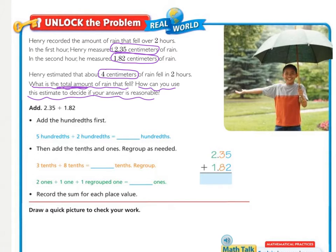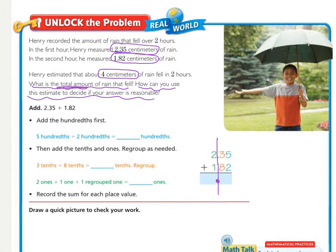The estimate is about 4 centimeters, and we'll use that after we have our actual. So now we need to add 2 and 35 hundredths plus 1 and 82 hundredths. Step one is to add the hundredths first. If you're going to be writing it vertically, you need to make sure that you line up your decimals. I'm going to bring my decimal down now.